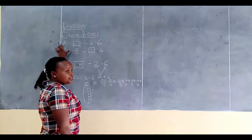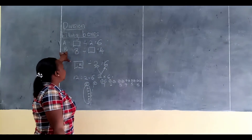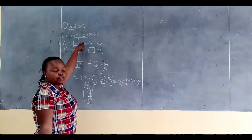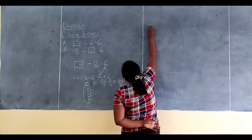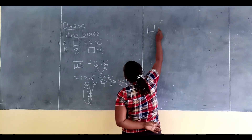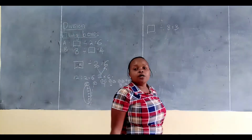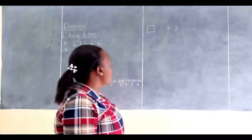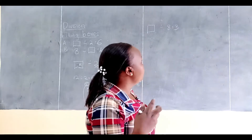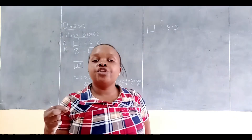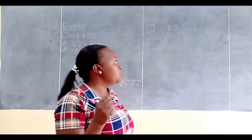Remember we are doing Part A — we are not yet going to Part B. Part B is somehow different from Part A, and we shall handle it later. The second example we are going to do: a box divided by 8 is equal to 3. As I told you, when you see a box first followed by division, to get the answer in the box, you are going to multiply.